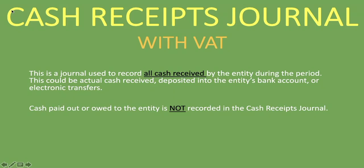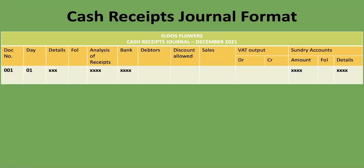What is the format for the cash receipts journal specifically when you also have to take VAT into account? We have an example here — Eldos Flowers, that's the name of the company. You start by putting the name of the company, then the name of the journal, and the month or period you are dealing with — for instance December 2021. That is the heading of the cash receipts journal: company name, journal name, and the period.